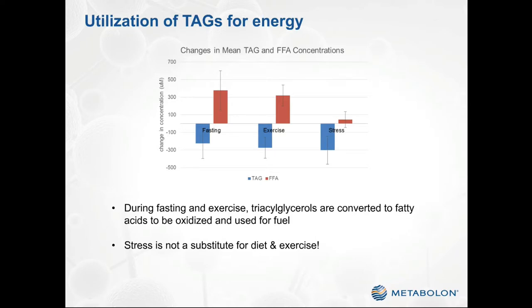This is quantified on this slide. Under fasting and exercise, there's a significant drop in triacylglycerol concentration and a concomitant increase in free fatty acids. However, you don't actually get three equivalents of free fatty acids for every equivalent of triacylglycerol, as you might expect, because the free fatty acids are being used up and oxidized for fuel. By contrast, under the cold stress condition, triacylglycerols went down but there was no concomitant increase in free fatty acids, suggesting that perhaps the triacylglycerols were being removed from circulation but not actually being utilized — suggesting that, unfortunately, stress is not a substitute for diet and exercise.